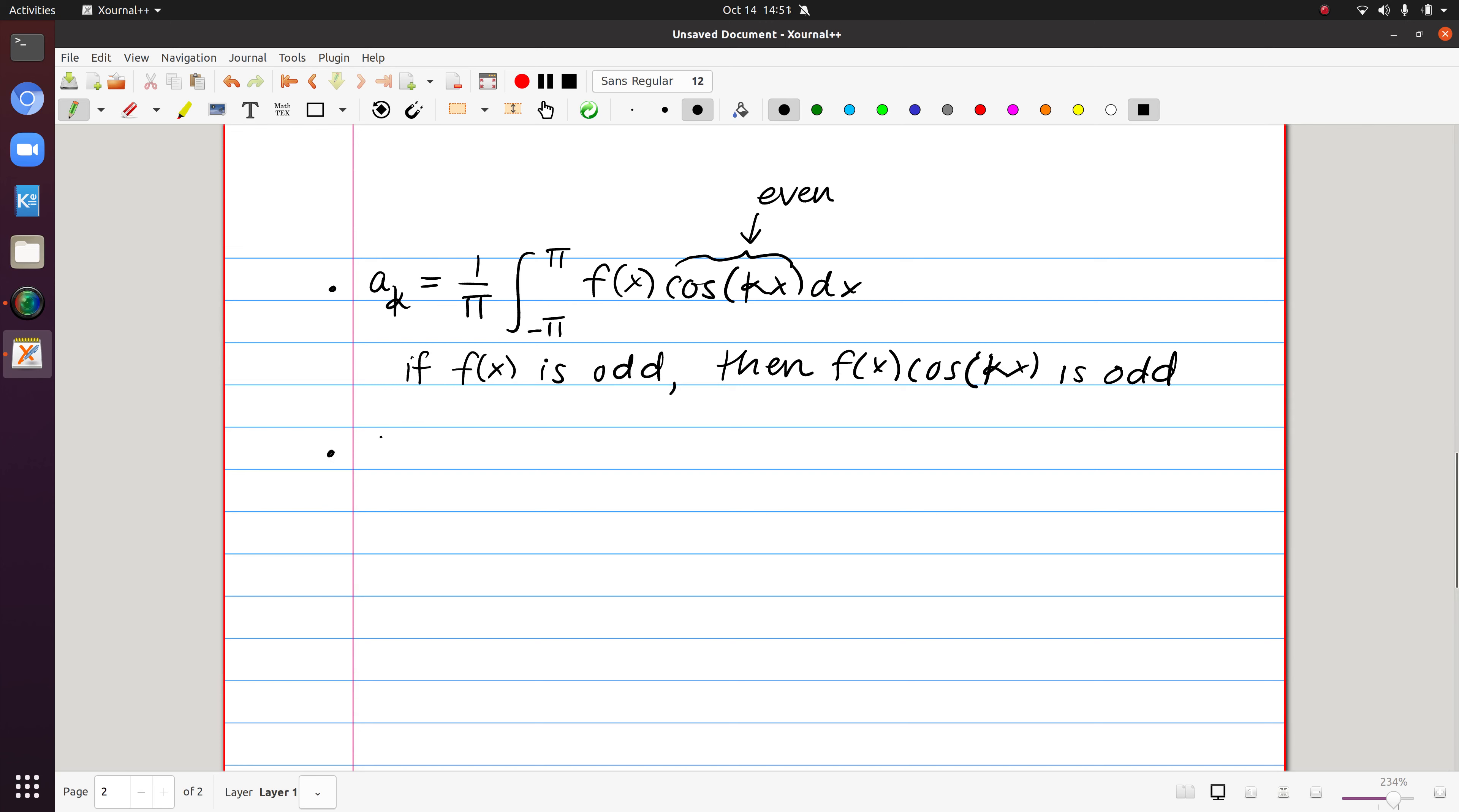If instead we focus on b sub k, that's going to be 1 over π, the integral from minus π to π of f of x times sine of kx. And again, what we want to remember here is sine is an odd function.